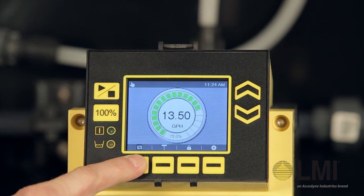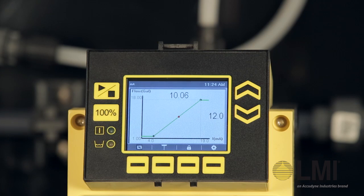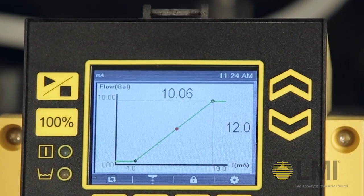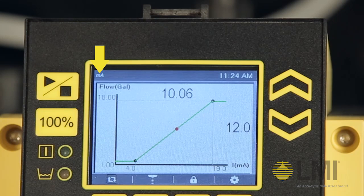First, press the Mode button to change to analog mode as indicated by the milliamp symbol in the navigation area. The main display will be a graph.